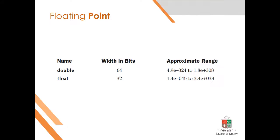Next is the floating point type. The floating point types are double and float. Double size is 64 bits and float size is 32 bits. Floating point is used for decimal values.